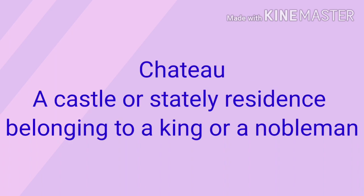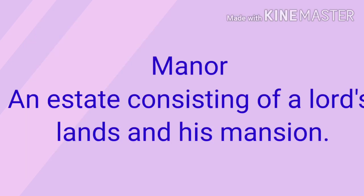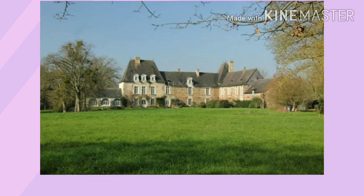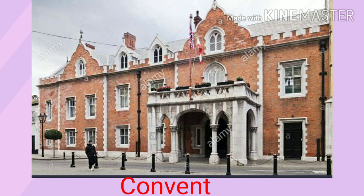Next is Château: it was a casual or stately residence belonging to a king or a nobleman. The plural of Château is Châteaux. Next is Manor: it was an estate consisting of a lord's lands and his mansion. You can look at the picture of a manor for further understanding. Next is Convent: it was a building belonging to a community devoted to a religious life. You can also look at the picture of a convent.